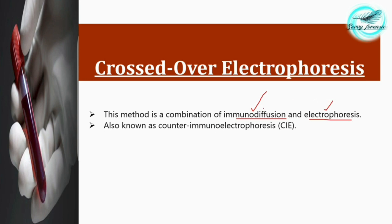By combining immunodiffusion and electrophoresis, we can identify the origin of blood. This method is also known as counter-immuno-electrophoresis, or CIE — you should remember this alternative name.